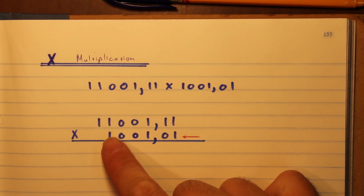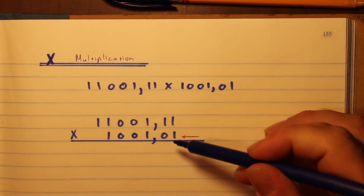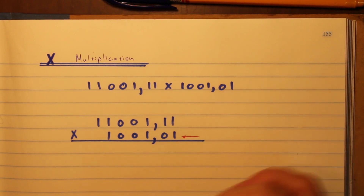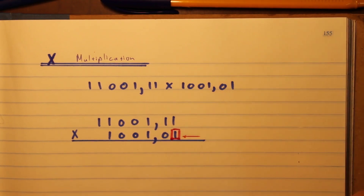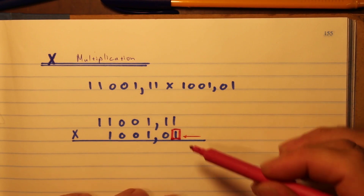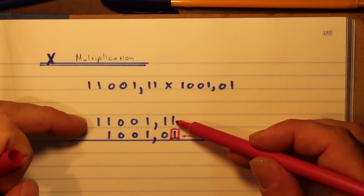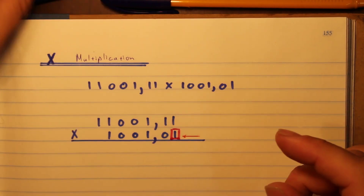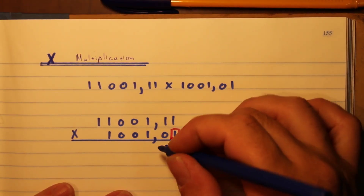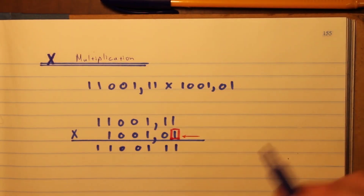Going across the bottom number in the direction of the arrow, you're going to look for the ones — the zeros you're going to ignore. So there's the first one over here, and I'm going to put a little pink box around it. That one times the top number is the same number, so I write it down: one one one zero zero one one. At this point I'm ignoring the commas.